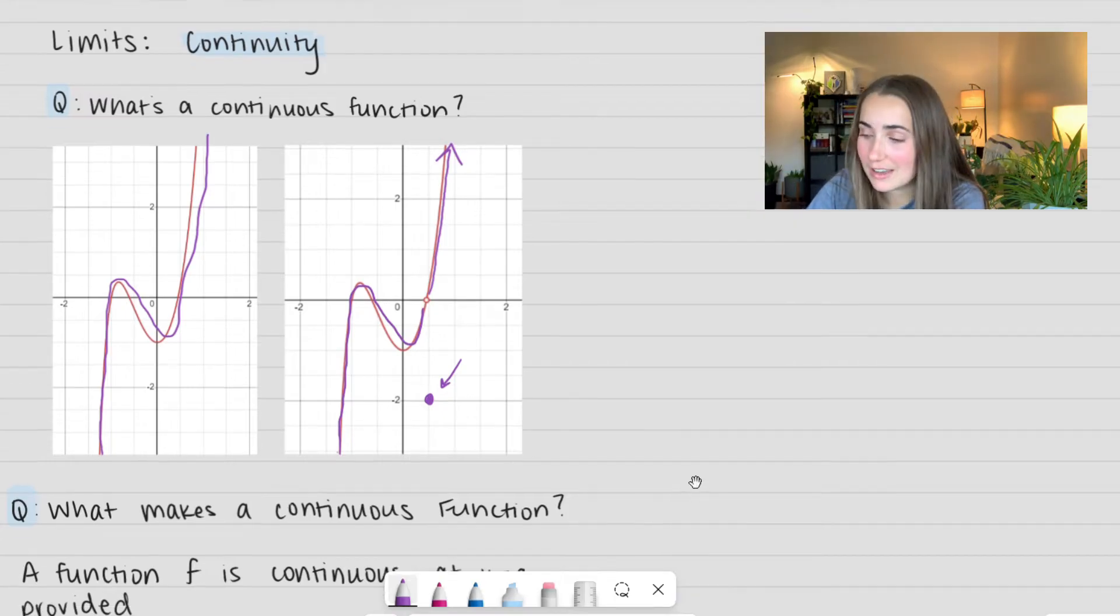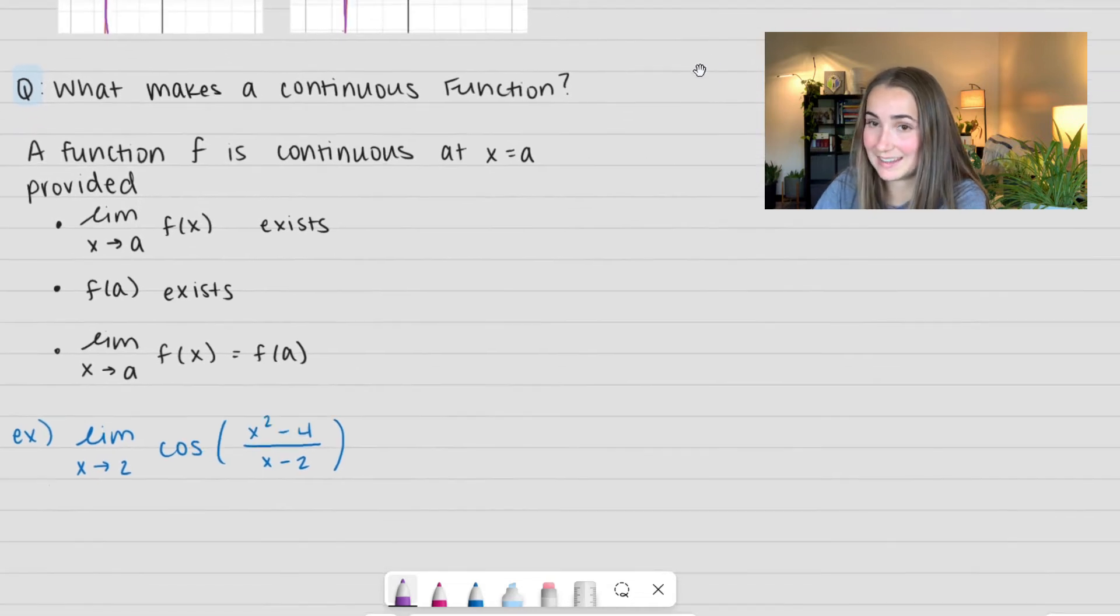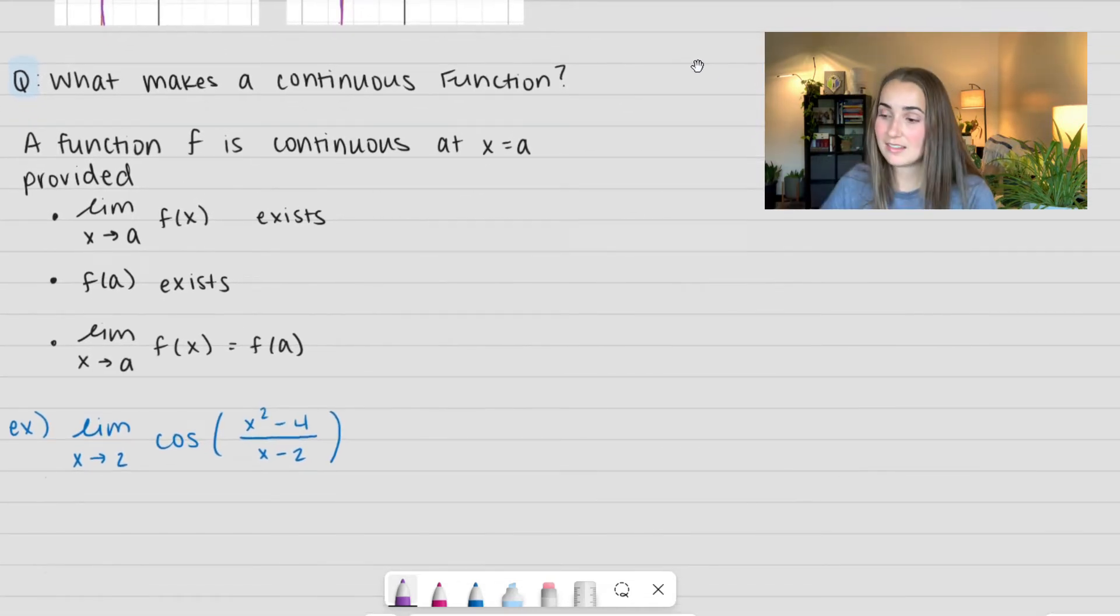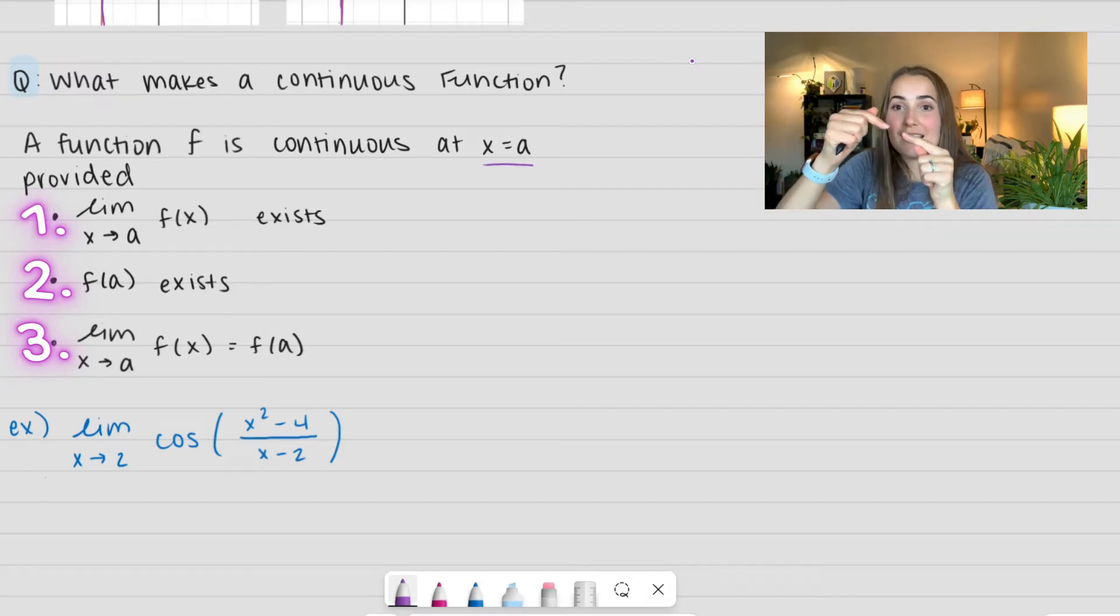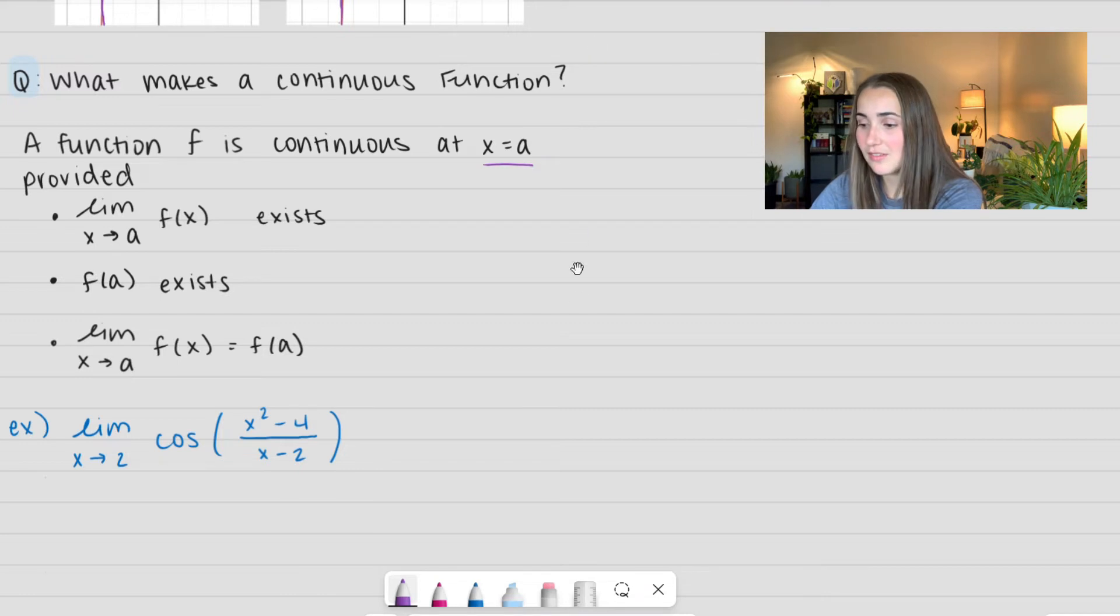So officially we have a real definition for this, not just the pen test, but you can always use the pen test. So a function f is continuous at some value x equals a, provided that first off the limit as x approaches a exists. The actual function evaluated at a also needs to exist. And these two first two options need to be equal to one another. So that means the limit exists and it goes to where that function is.